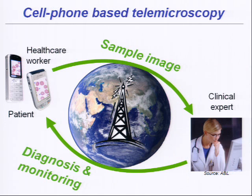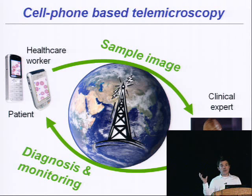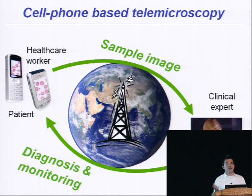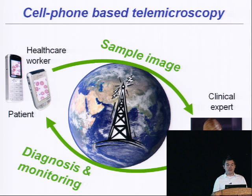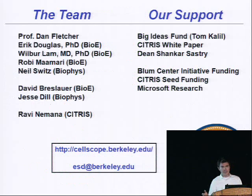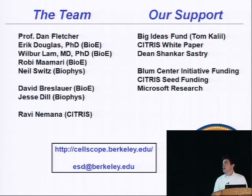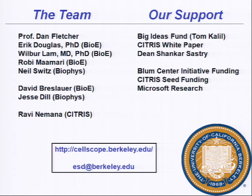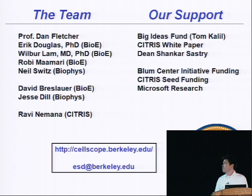Just to wrap it up: the cell phone infrastructure is great in a lot of places where there's not a lot else. In Congo, there are 300 miles of roads but cell phone signals everywhere. If we can use that existing infrastructure to take these sophisticated diagnostics to people who need them desperately, I think it could have a tremendous impact. This is some of the team working on it — the group is led by Professor Dan Fletcher in bioengineering on campus, with a lot of help from Ravi and Citrus. If you have any questions, I'd be happy to address them during the panel. Check out our website at cellscope.berkeley. Thanks.